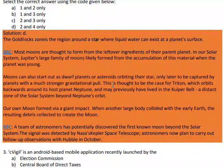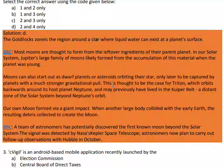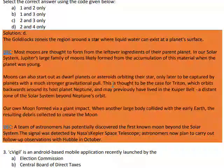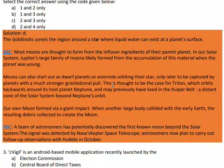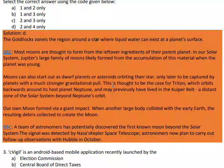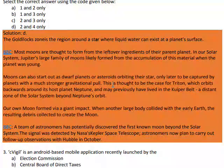Moons can also start out as dwarf planets or asteroids orbiting their stars, only later to be captured by planets with a much stronger gravitational pull. This is thought to be the case for Triton, which orbits backwards around its host planet Neptune, and may previously have lived in the Kuiper Belt, a distant zone of the solar system beyond Neptune's orbit.